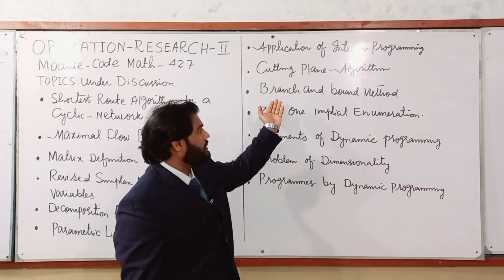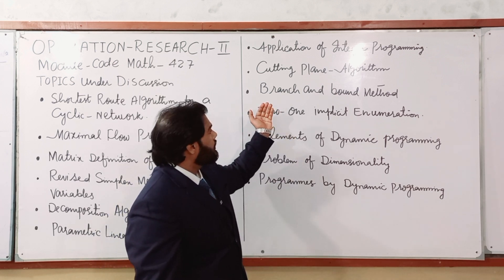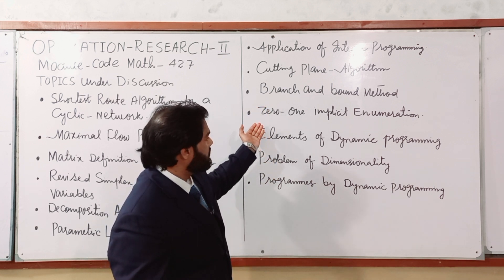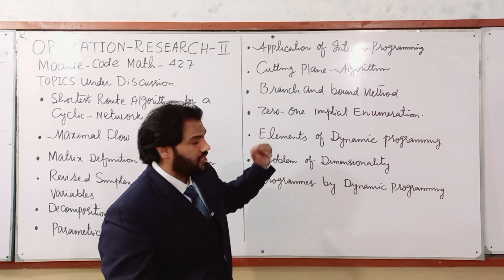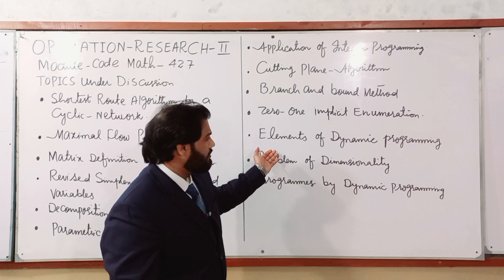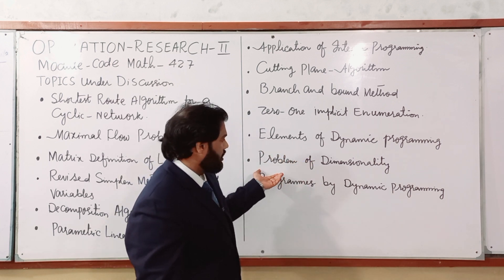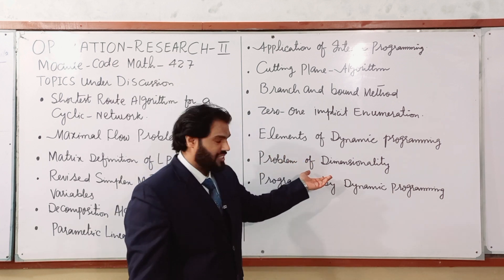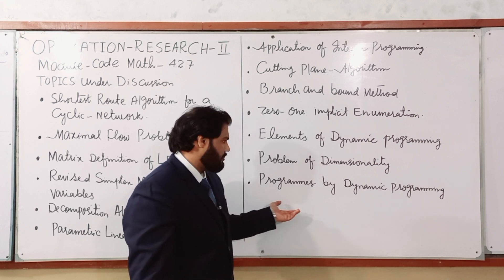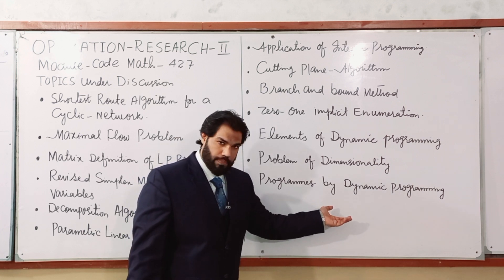Further topics in Operation Research 2 include: parametric linear programming, application of integer programming, cutting plane algorithm, branch and bound method, 0-1 implicit enumeration, elements of dynamic programming, the problem of dimensionality, and programs by dynamic programming.